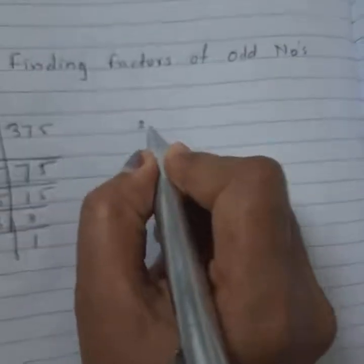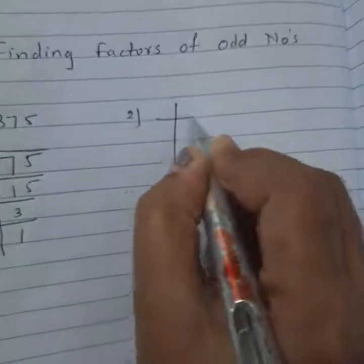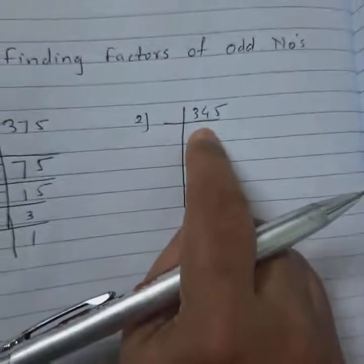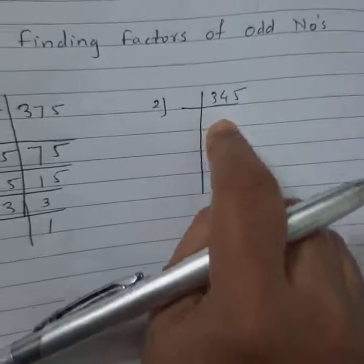Now I take a second example: 345. For 345, I use two rules - the 5's divisibility rule and the 3's divisibility rule.